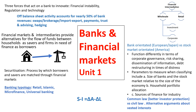I'd also like to talk about off-balance sheet activity, which accounts for nearly 50% of bank revenues. So apart from the business of taking deposits and giving loans, banks also make almost 50% of their revenues from off-balance sheet activities like swaps, brokerage, import/export payments, trust and advising, and hedging. These off-balance sheet activities are quite prominent in terms of bank revenues.